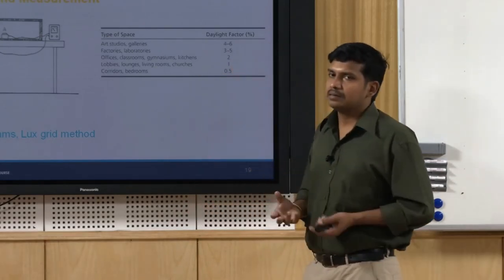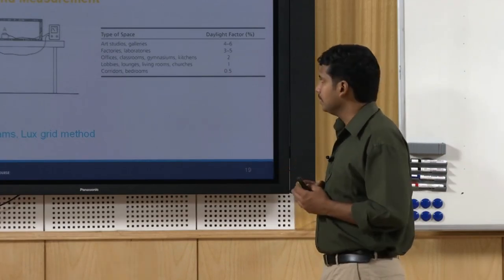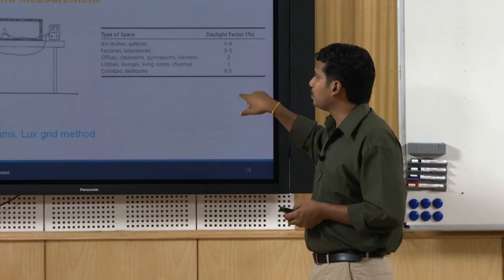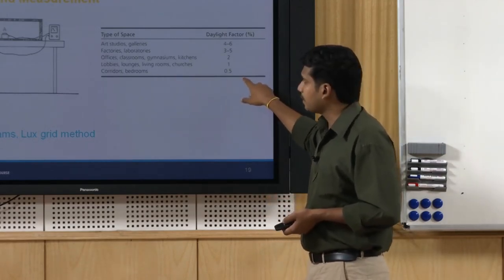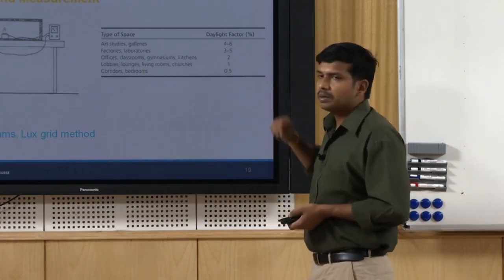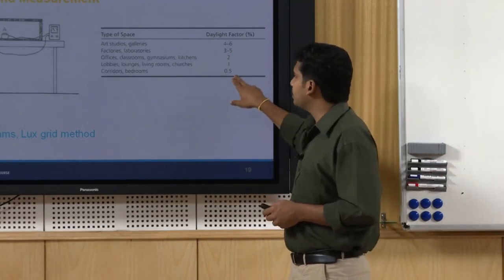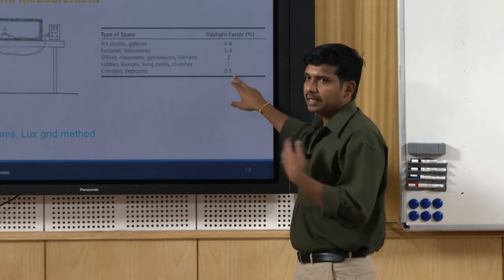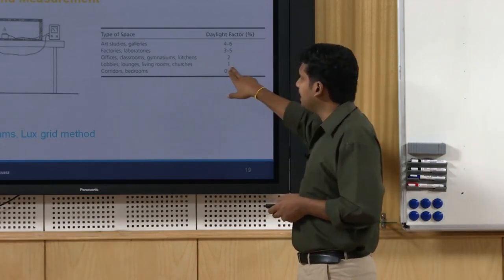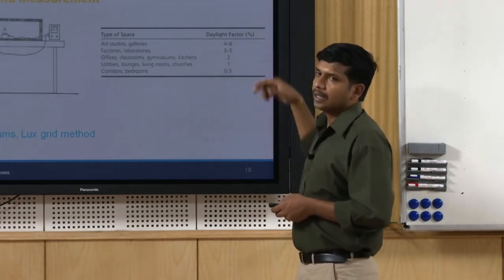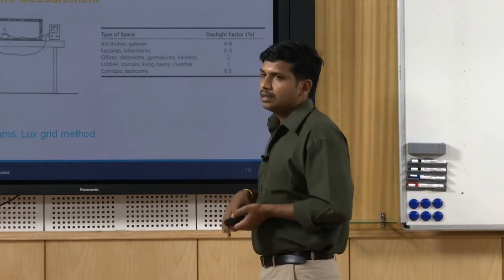Standards also specify daylight factors by space type. For example, corridors may need 0.5% daylight factor and lobbies/lounges 1%, while laboratories may need higher values. In India, with 8,000 lux design sky illuminance, 0.5% equals 40 lux, 1% equals 80 lux, and a higher factor like 5% equals 400 lux — that is what these specifications translate to in practice.